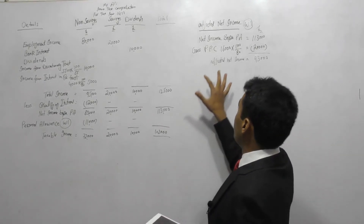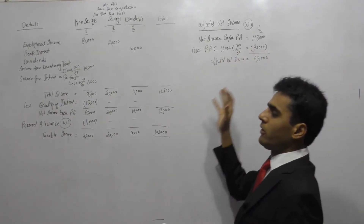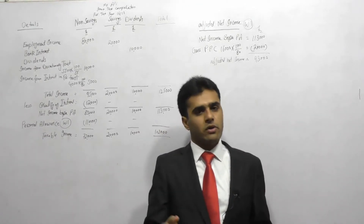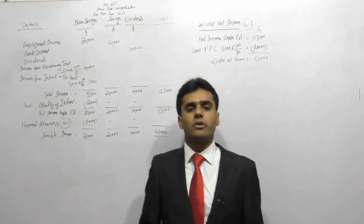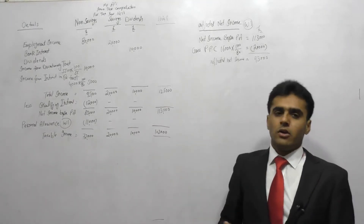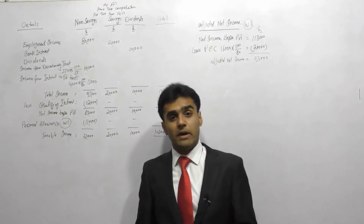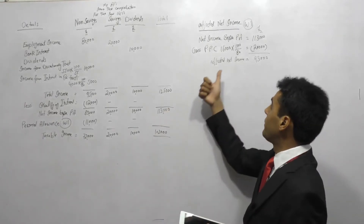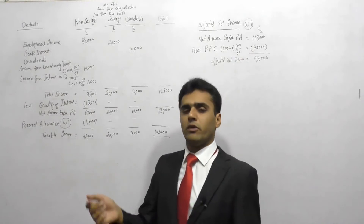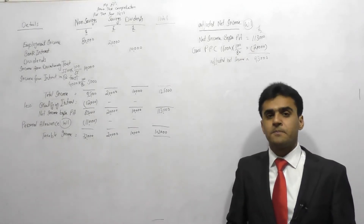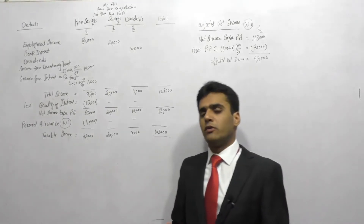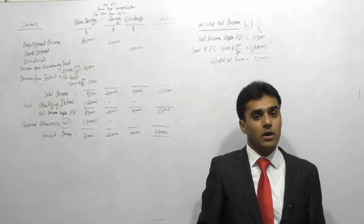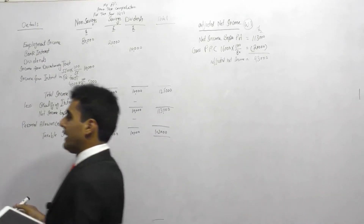The third benefit of personal pension contribution is that the gross amount extends both the basic rate band and the higher rate band. Normally the basic rate band is £32,000, but it is extended by the £20,000 gross pension contribution to £52,000. Likewise, the higher rate band is extended by the same £20,000, meaning we pay less tax at the higher rates.